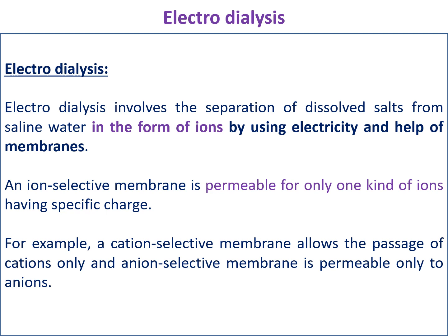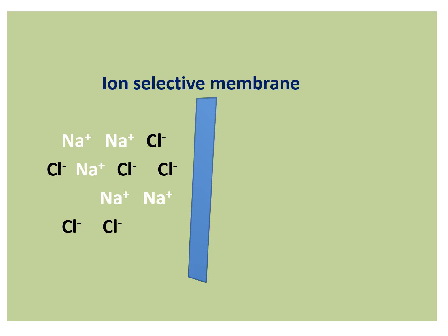For example, a cation selective membrane only allows the passage of cations — sodium (Na+) is a cation, so it only allows cations to move from left side to right side. The movement of anions is prevented by the cation selective membrane. Similarly, if it is an anion selective membrane, it only allows the passage of anions.